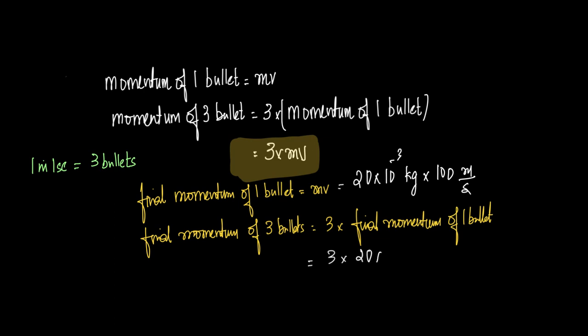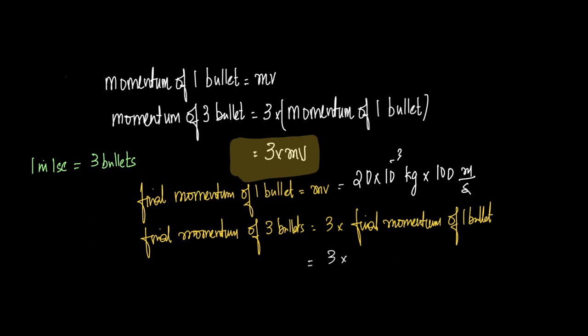So we have 3 into 20 into 10 to the power minus 3 into 100 kilogram meter per second as the final momentum of the bullets. In one second, three bullets are fired — so that's how the equation gets modified. The equation now becomes: minus Mg·Vg = 3·Mb·Vb.